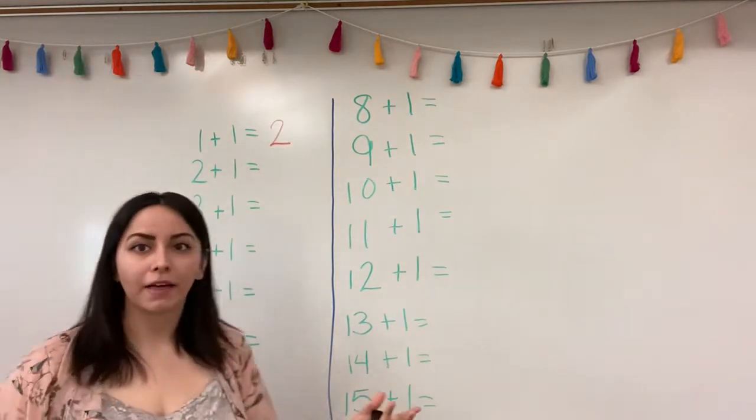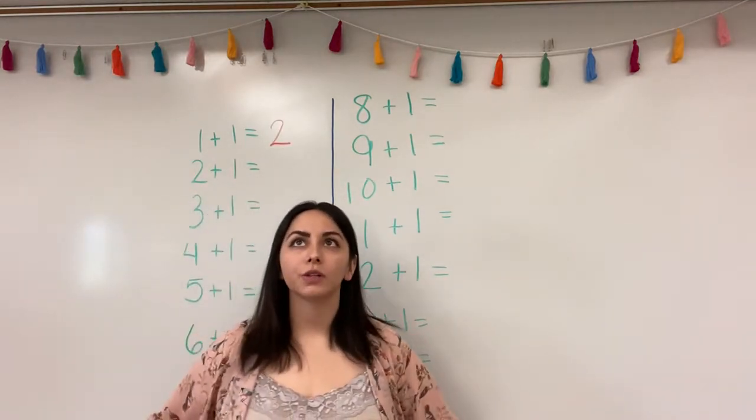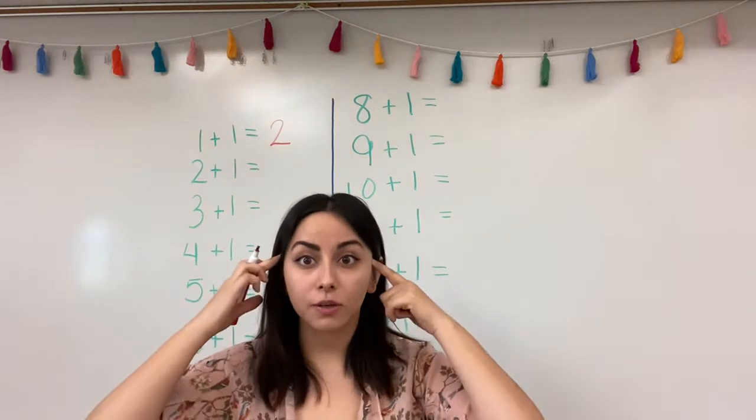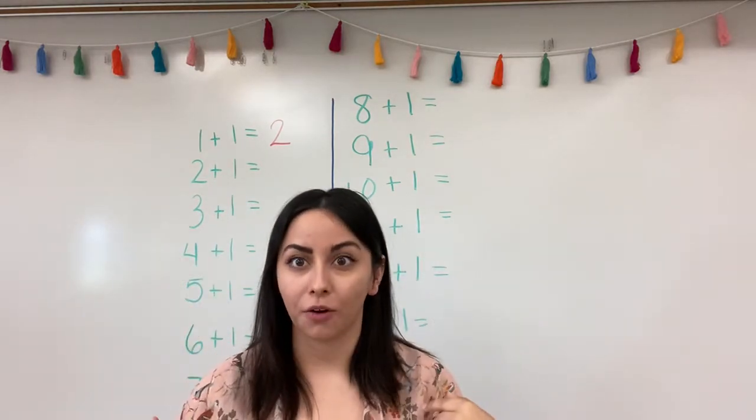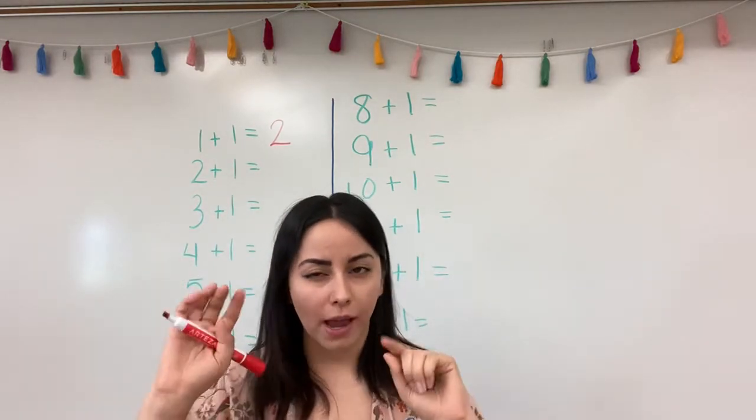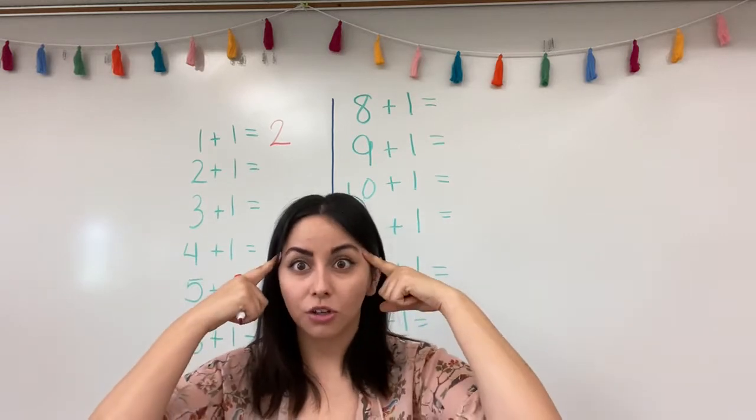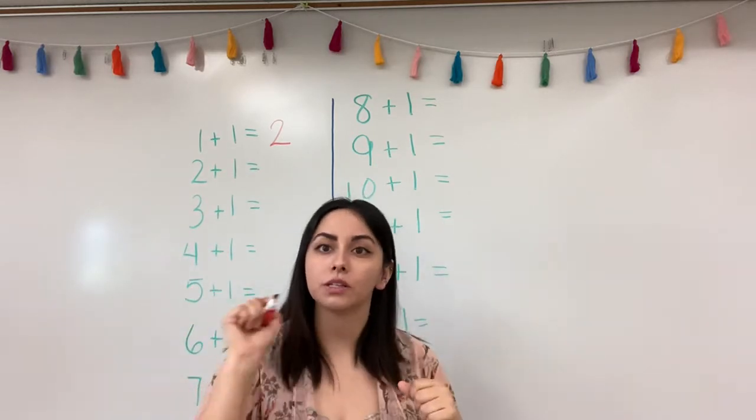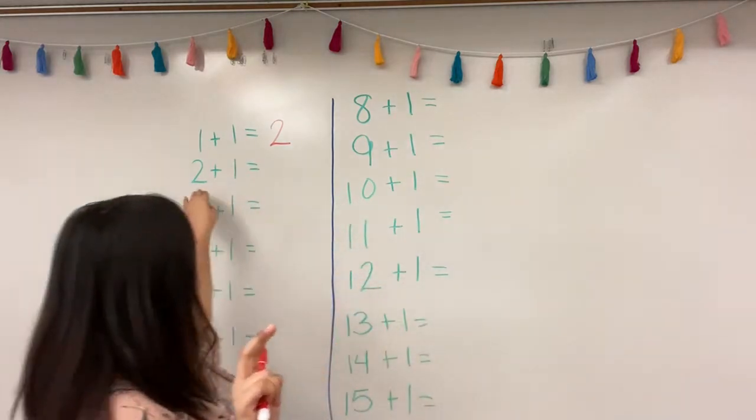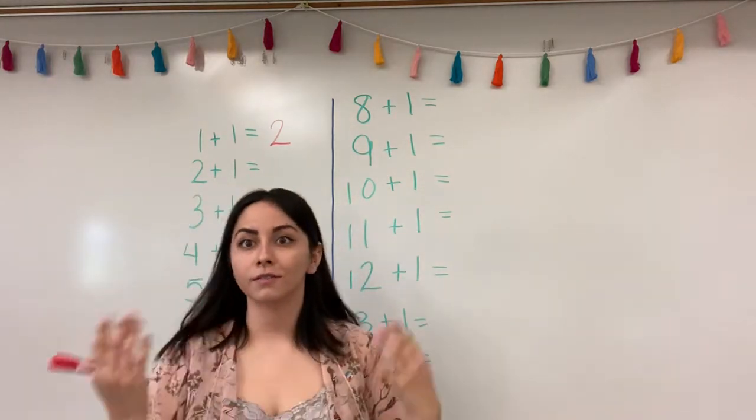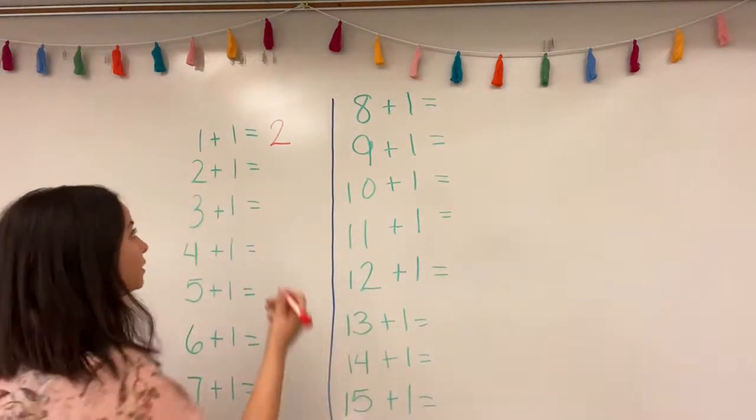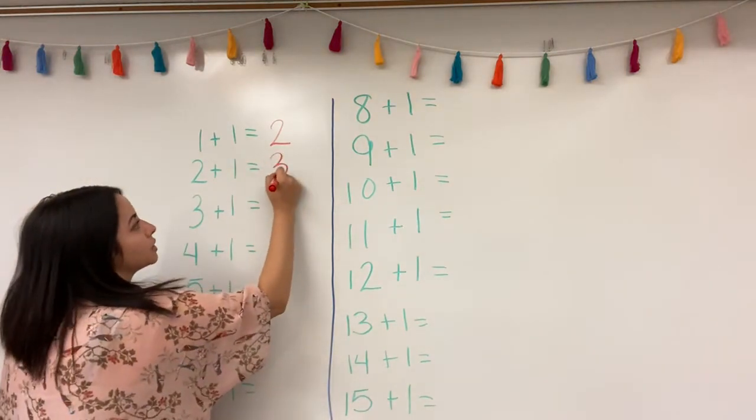Now we're going to keep adding ones. What's two plus one? If you know it and you can do it in your brain, go ahead and say it to me. But if you can't, try adding your fingers until you're able to say it in your brain. So what's two plus one more? Say it to me if you know it. Three. Good job. See, I told you it's really easy.